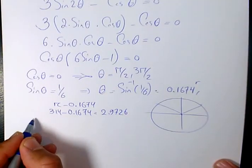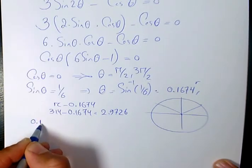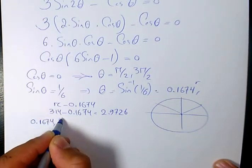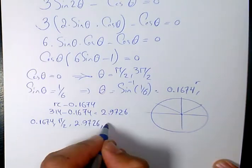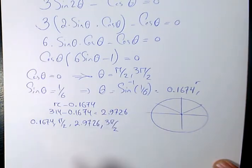So we have these four answers: 0.1674, pi over 2, 2.9726, and 3 pi over 2. These are the four answers.